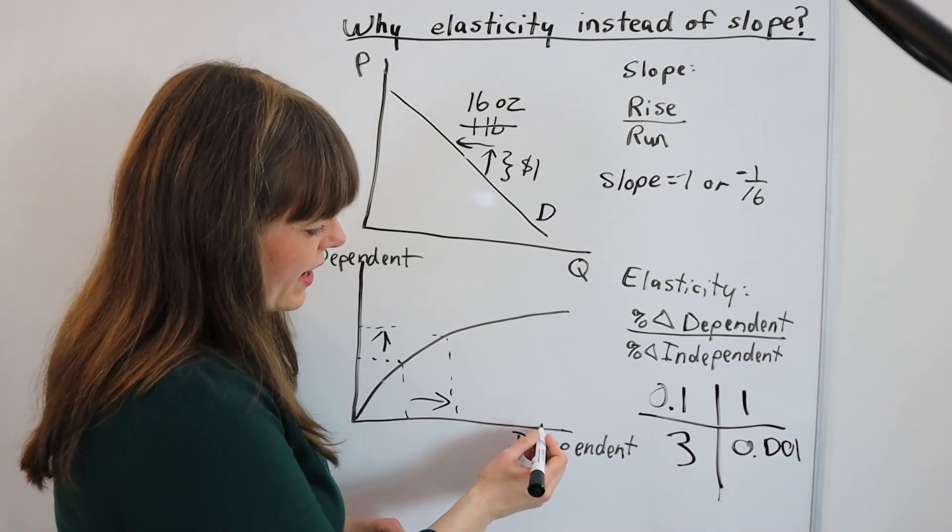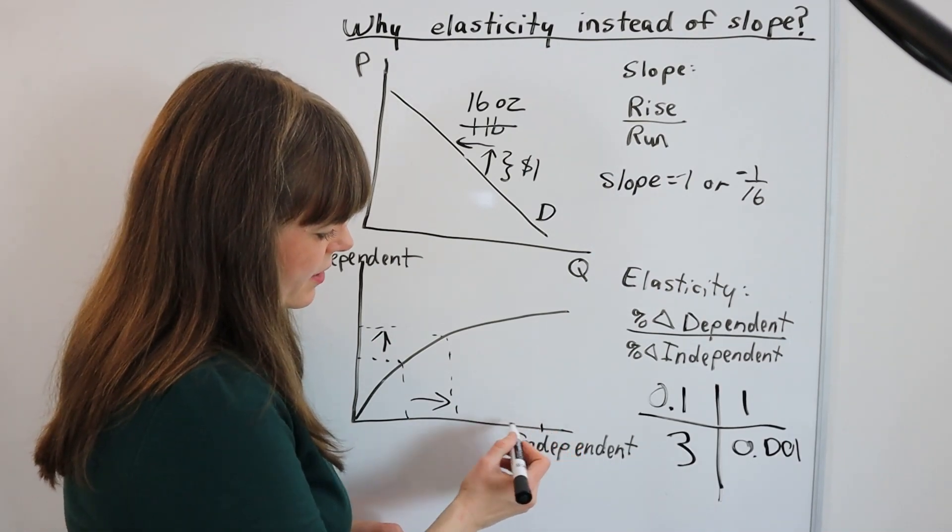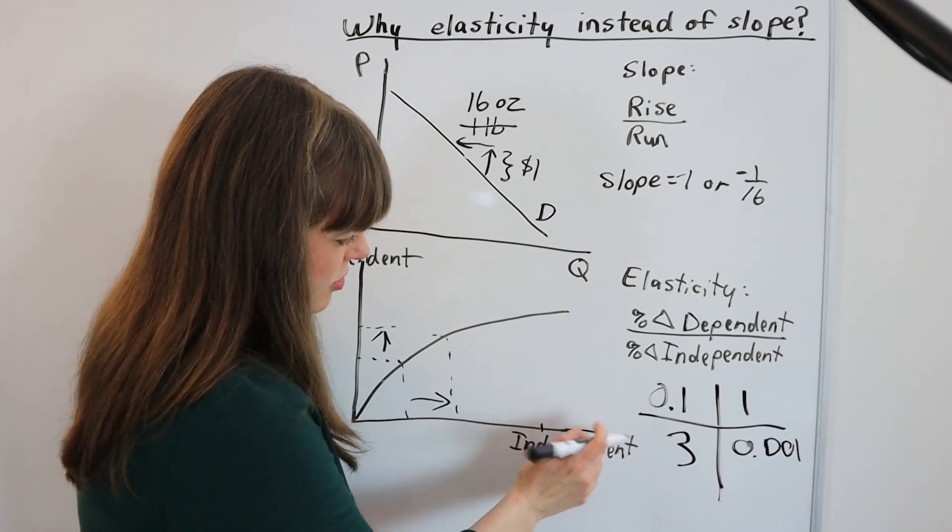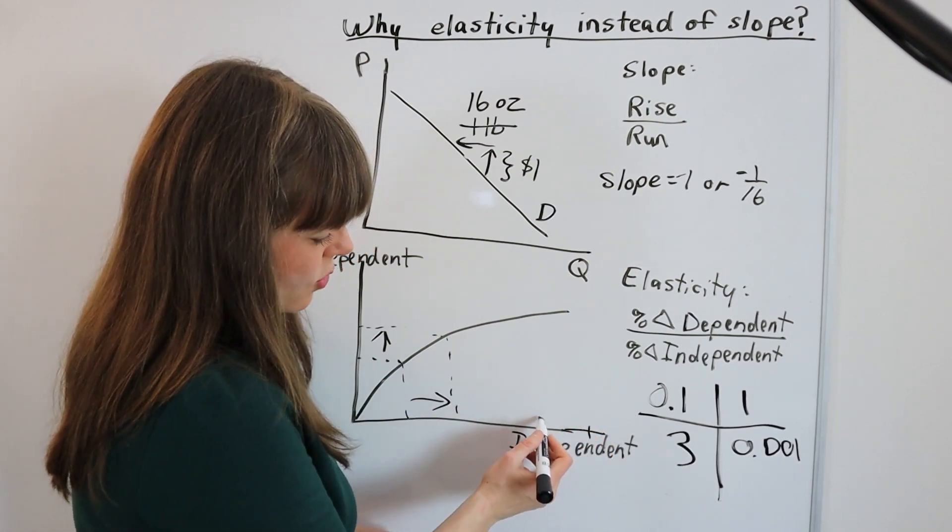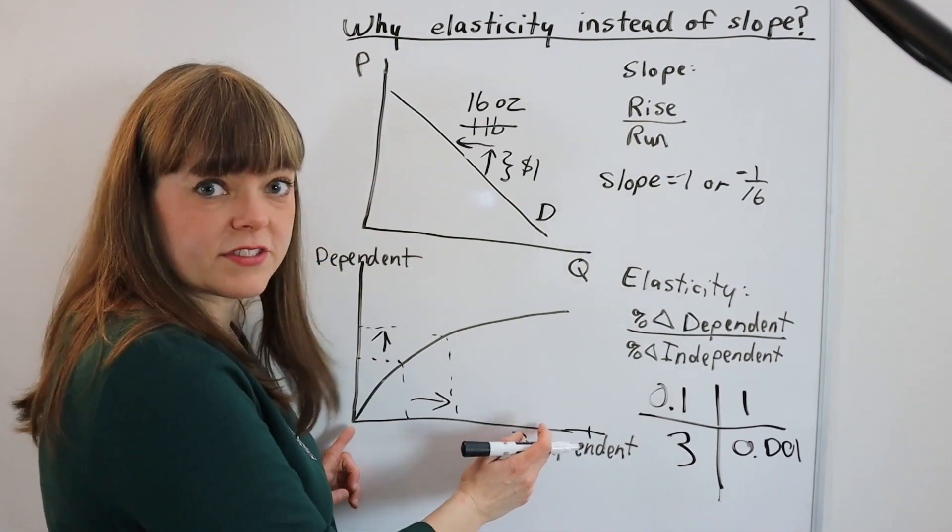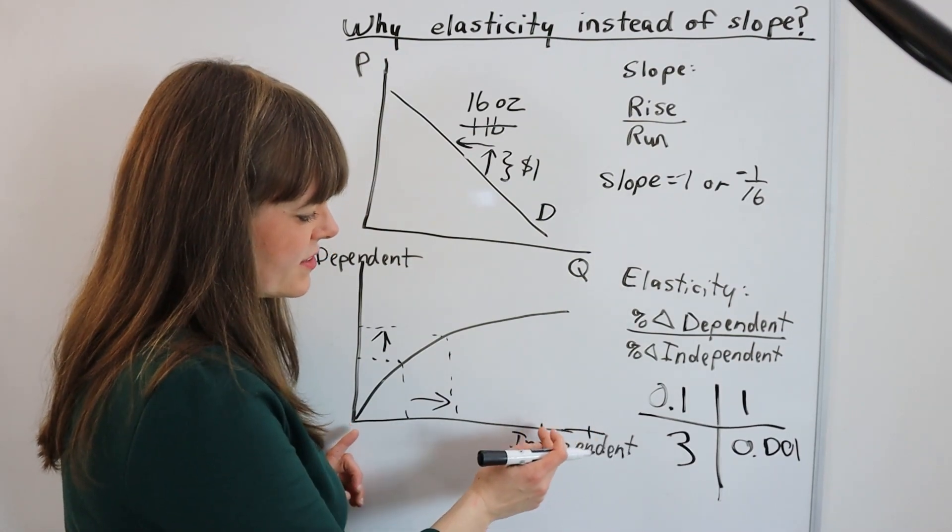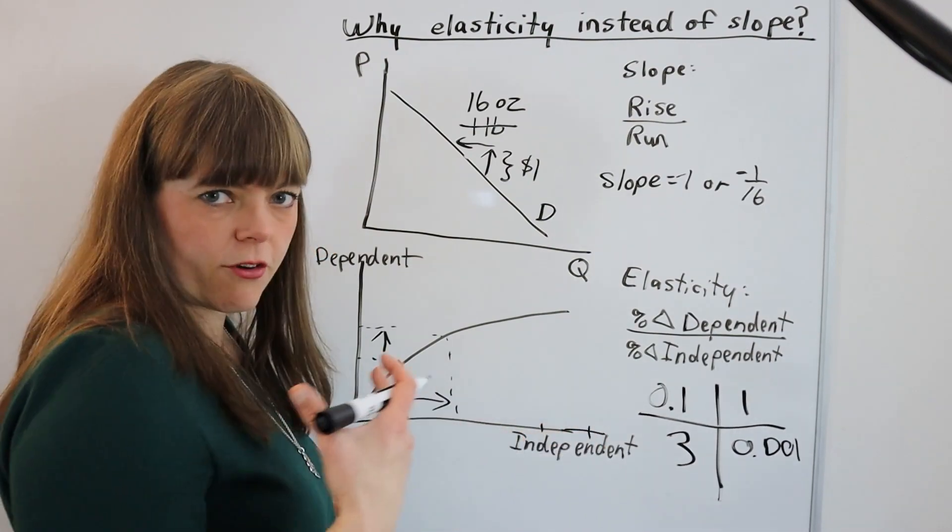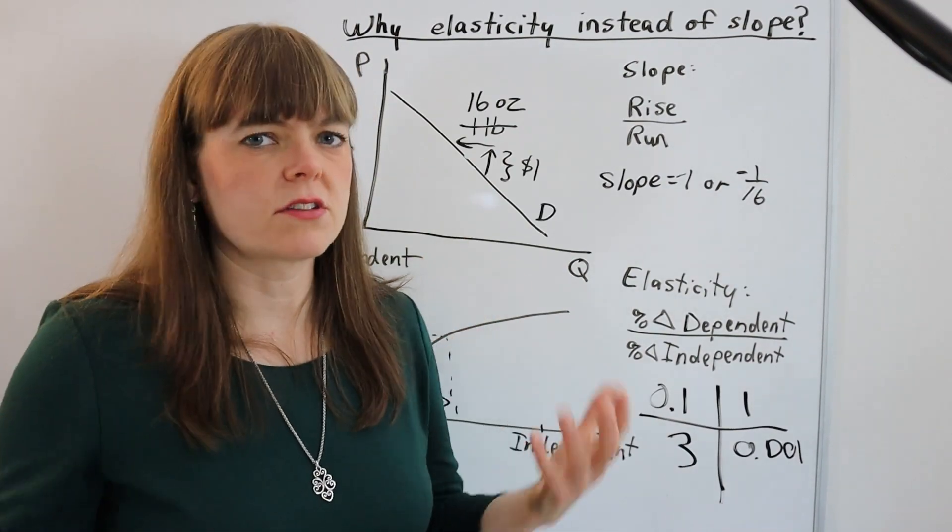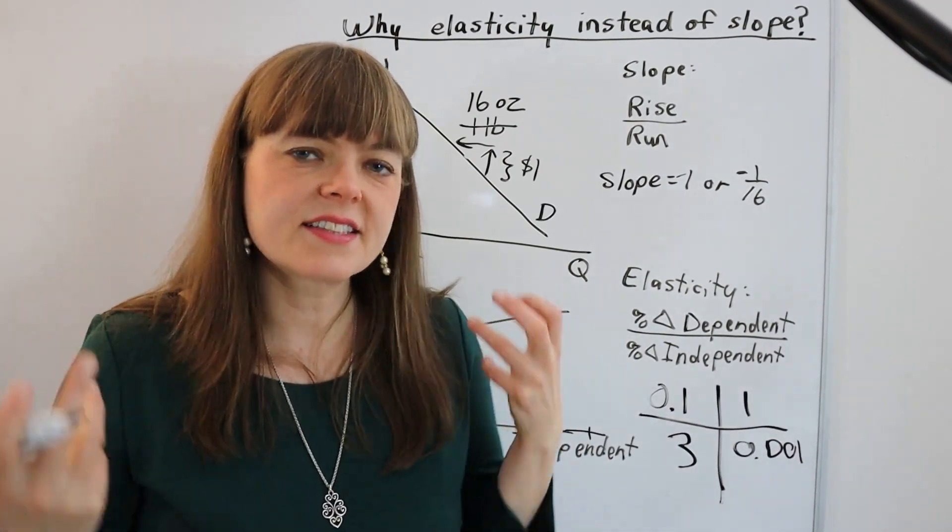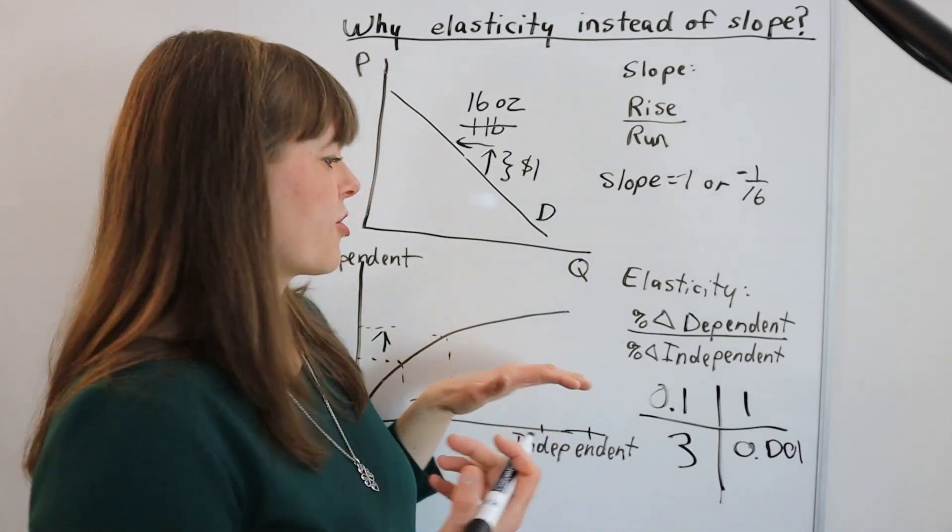Whereas if you're way out here, going the same distance, like let's say we increase it by this distance, this is going from, this is roughly a 20% increase. And therefore where you start on the graph matters a lot. And it just adds this context to the thing that you're measuring.